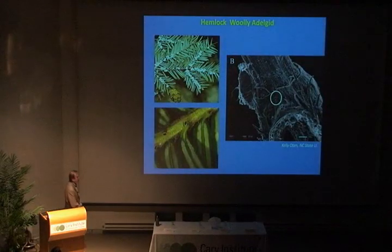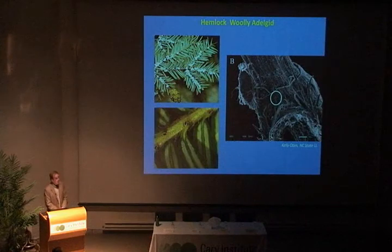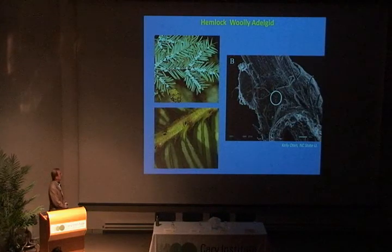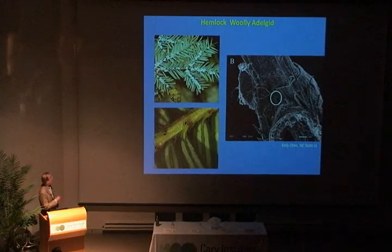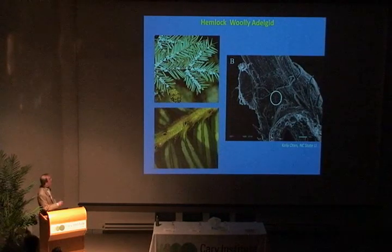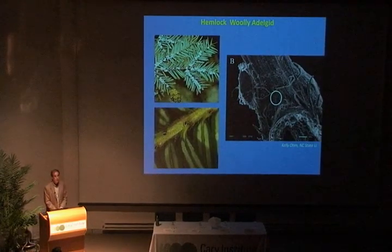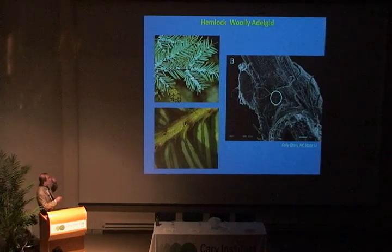Let's start with the hemlock woolly adelgid — I think most of you are probably familiar with this. This is an aphid-like insect that attacks eastern hemlock and Carolina hemlock, the two hemlock species we have in the eastern U.S. If you were to see this in the field on the underside of hemlock twigs, it looks like woolly white sacks that are used to protect both the insects and the eggs — and now is a good time to see it.